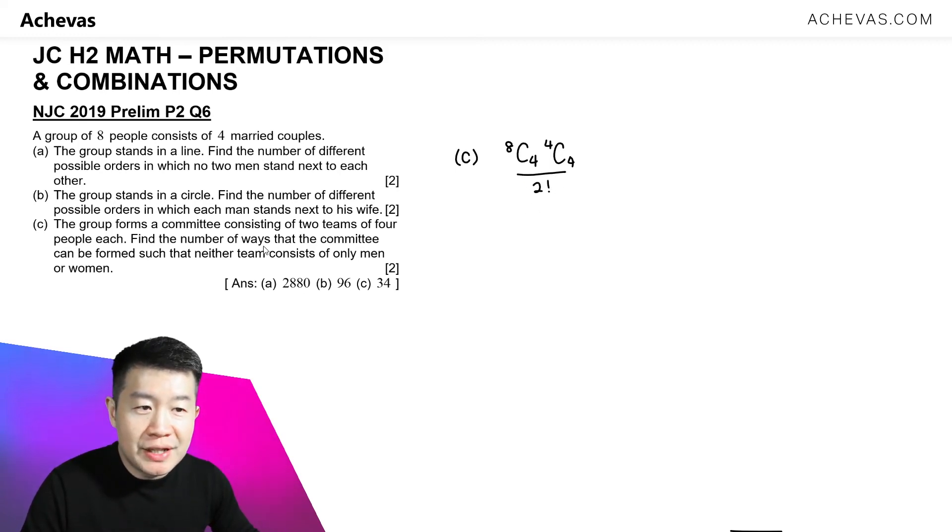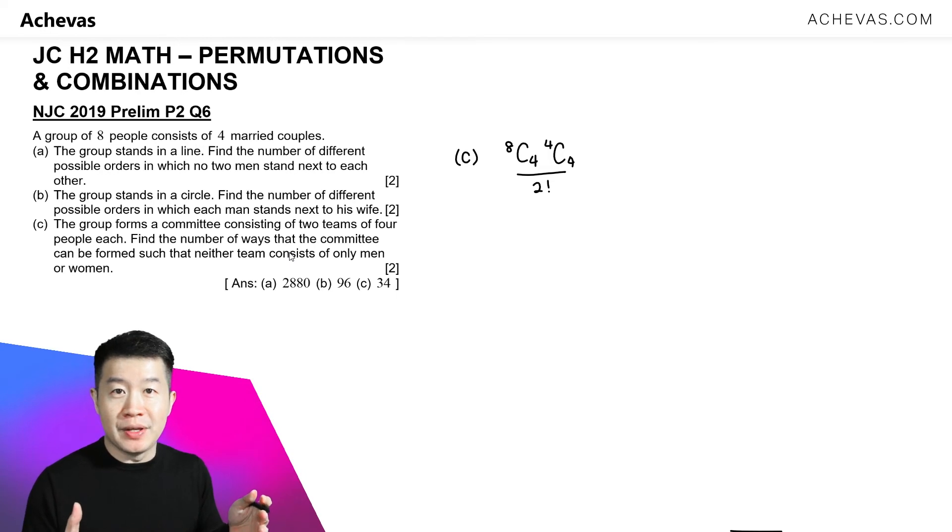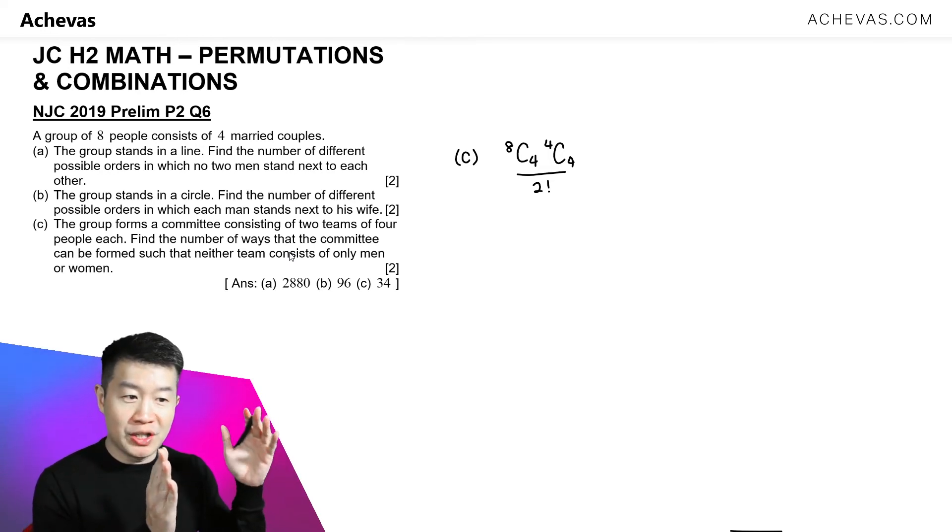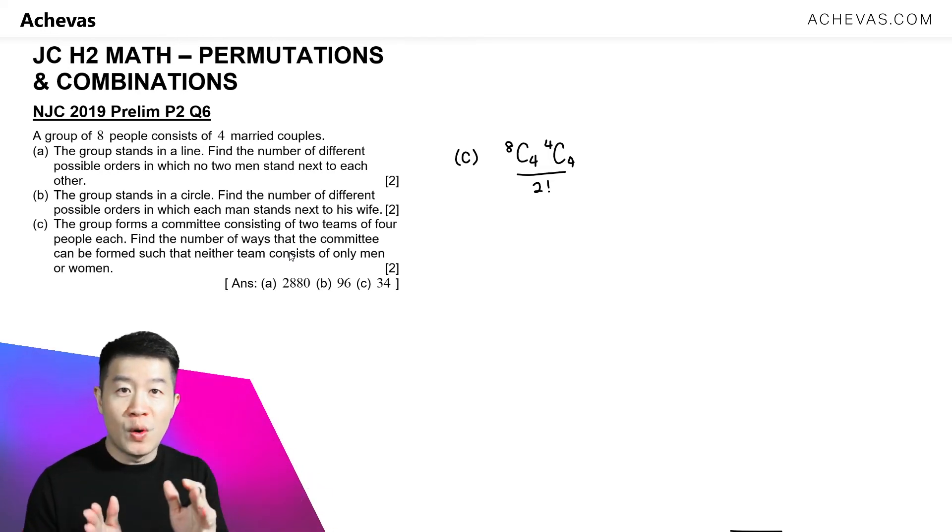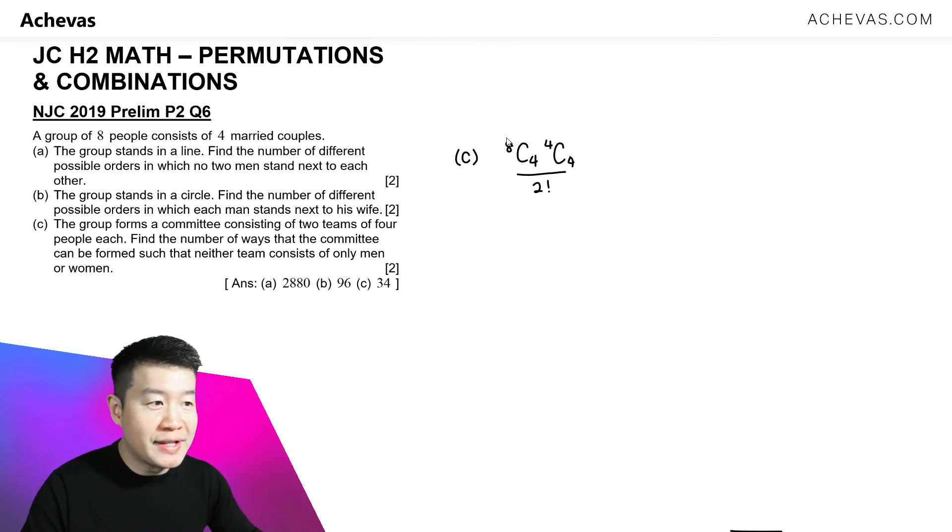And the question also mentioned that neither of the teams should consist of only men or only women. And how many possible ways can this be? There's just one way. Because it will be just one team with all men, one team with all women. So there's just one such team. So we will minus away that one kind of team. So this is going to be equal to 34.